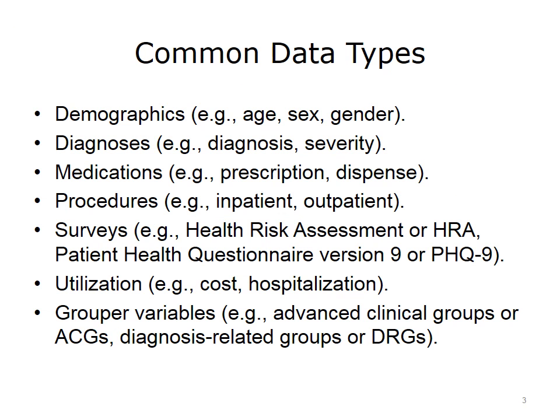Common data types used for population health data systems and analytics include demographics information, such as age, sex, and gender; diagnostic information, such as the actual diagnosis and severity of a diagnosis; and medication information, such as prescriptions, dispenses, and filled medications.